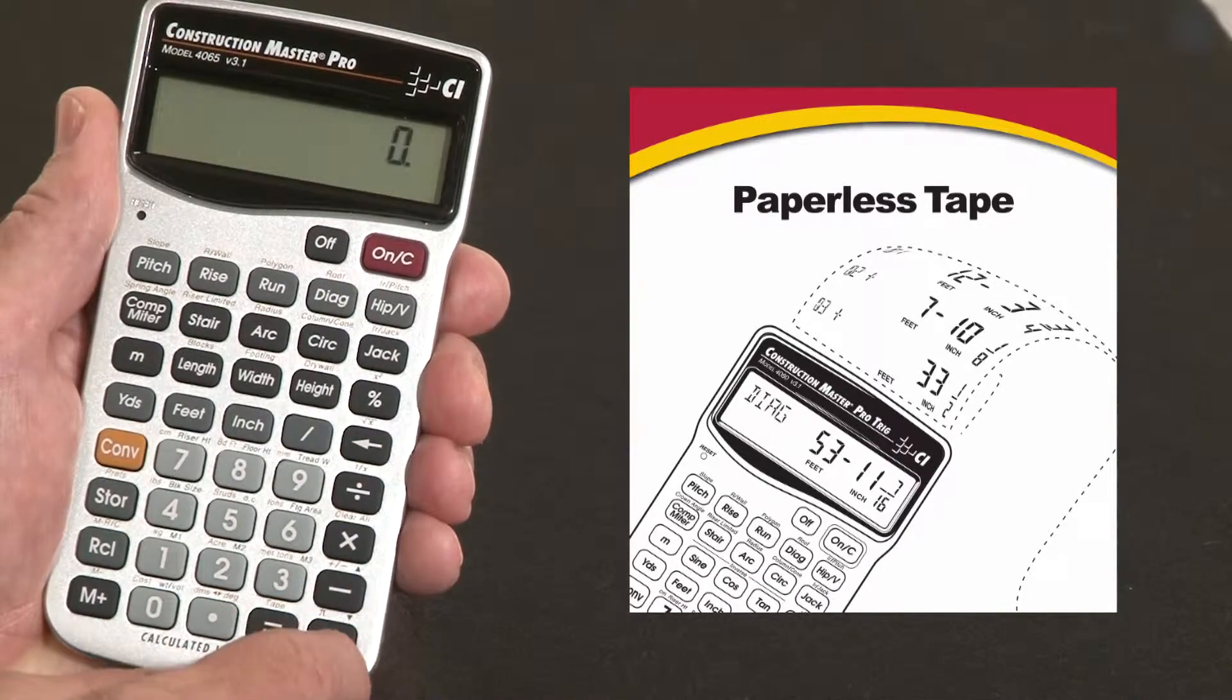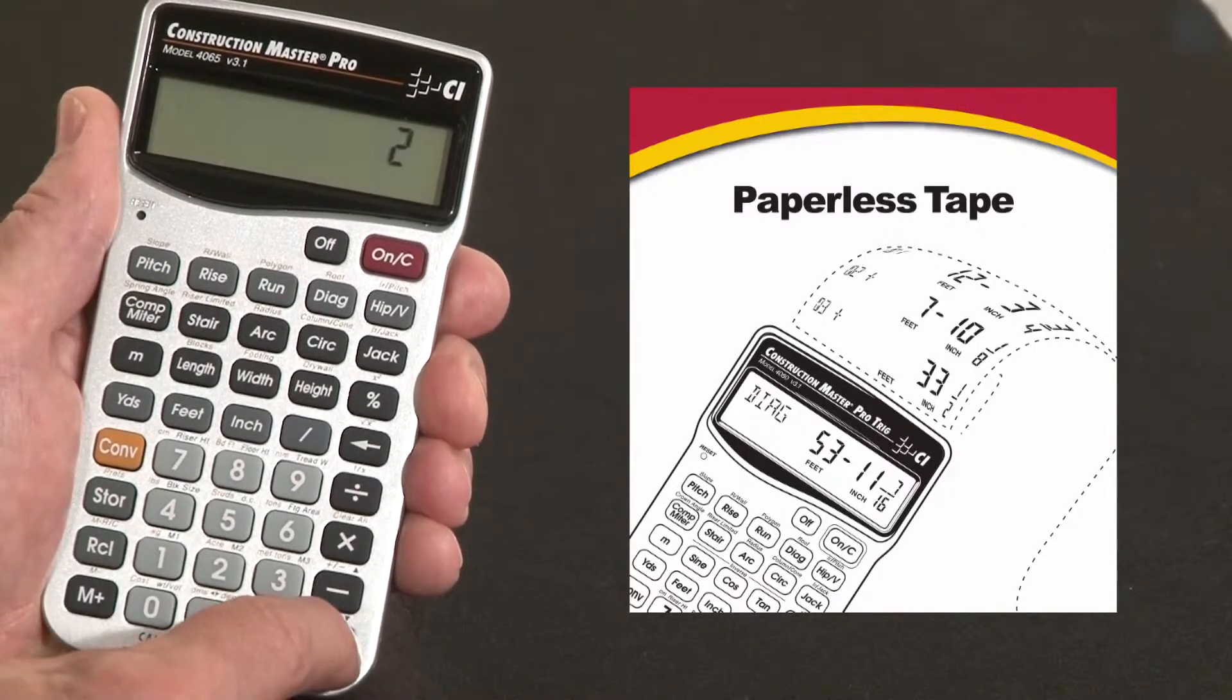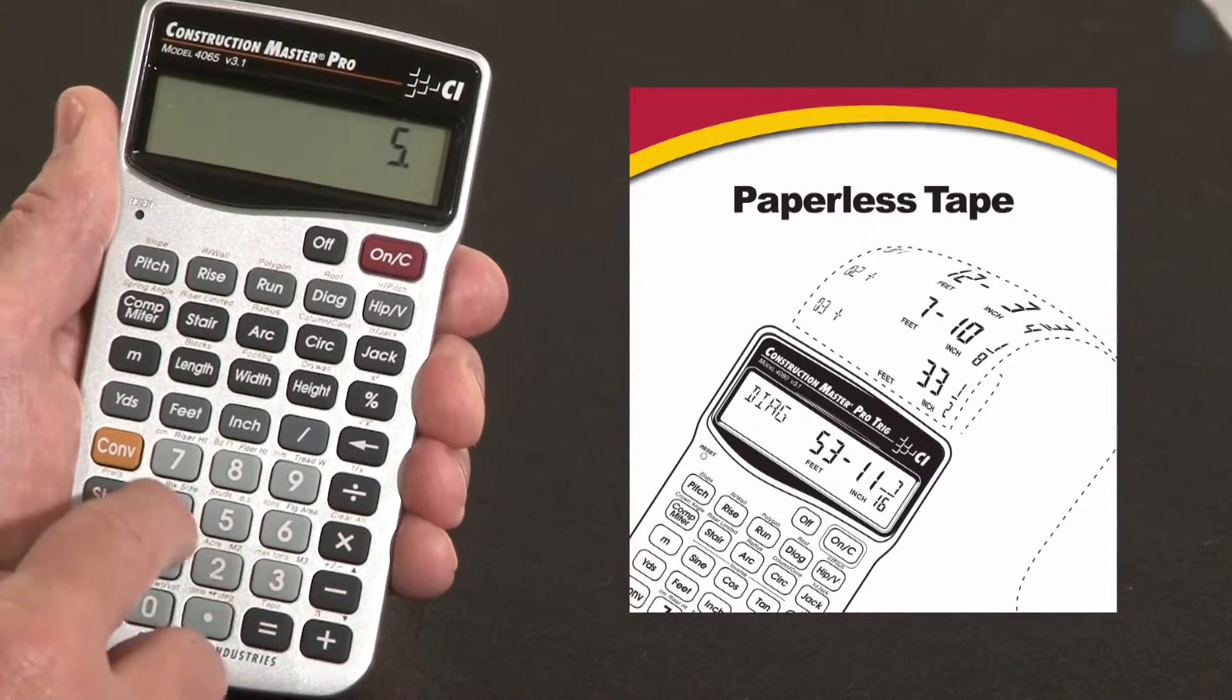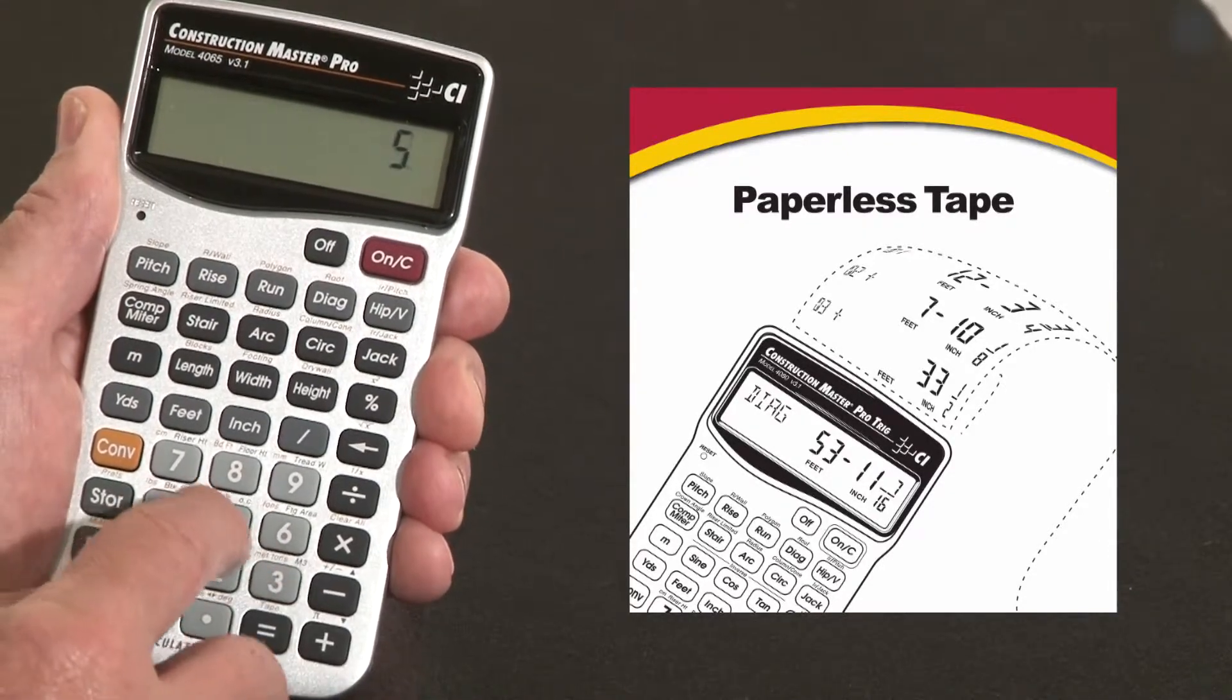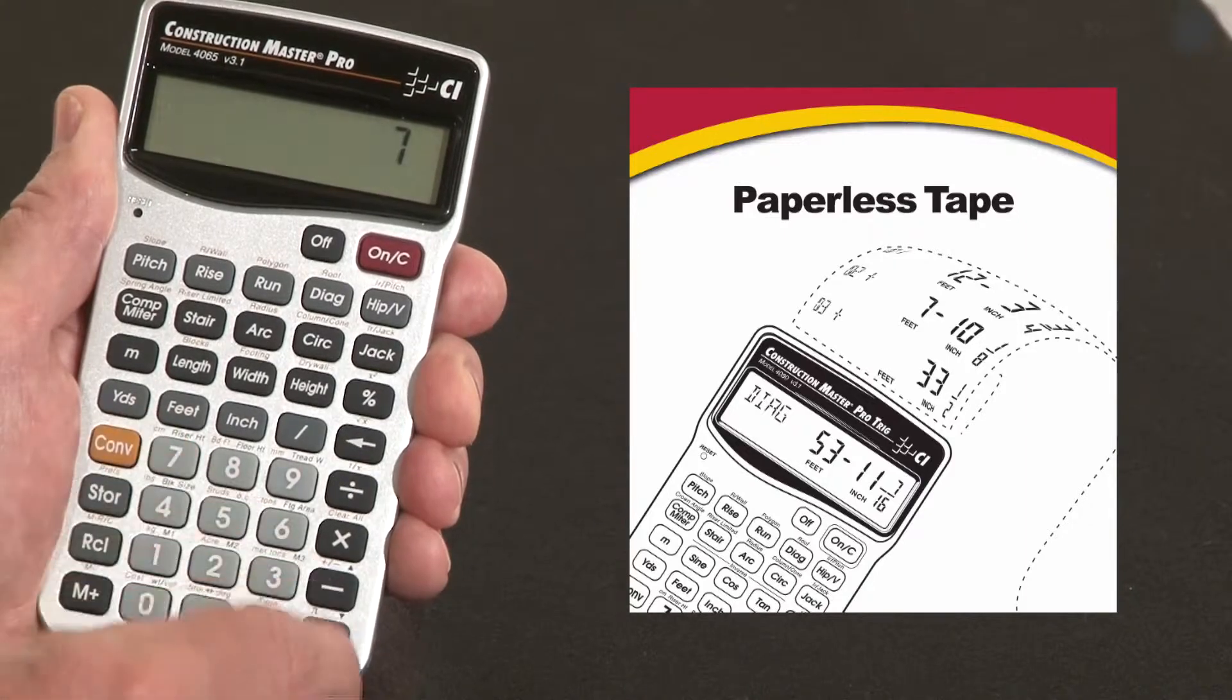For instance, let me add a string of dimensions. I'll just go without the dimensions to make it faster. Two plus three plus four plus five plus seven equals.